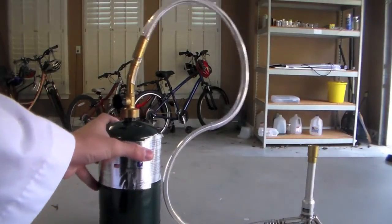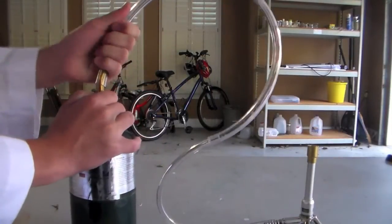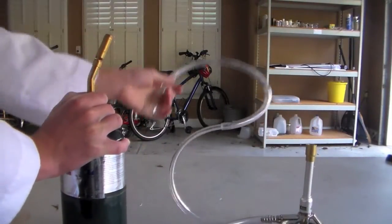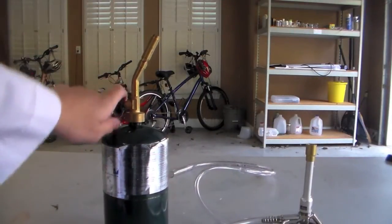Now the great thing about this design is that you can still use this as an ordinary propane torch. All you have to do is remove the tubing and just light it up like a normal torch, and you can see it fires right up.